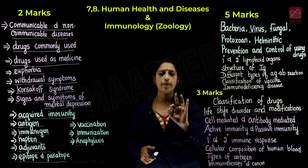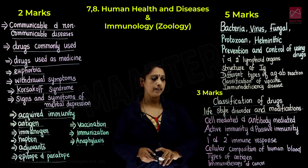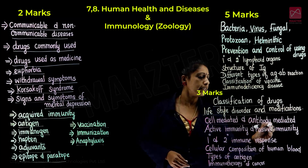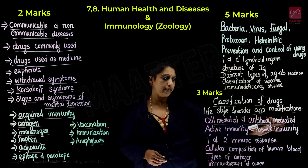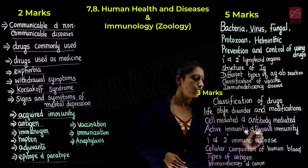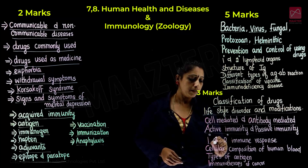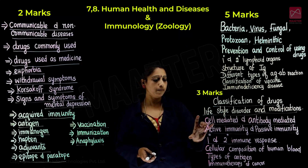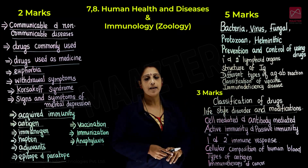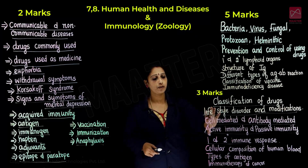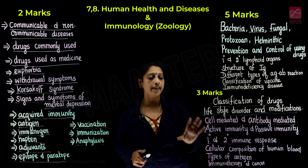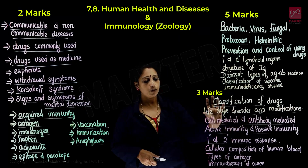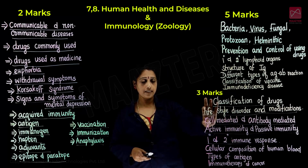The third question covers cell-mediated and antibody-mediated immunity, active immunity and passive immunity, and primary and secondary immune response. If you study these, you will find three questions covered in this section. This is detailed content from the textbook.